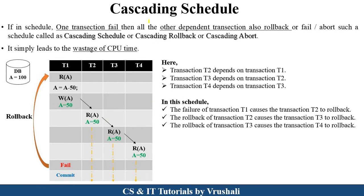The first type is cascading schedule. If one transaction fails, all other dependent transactions also fail or roll back. This means either the transaction completed successfully or it is aborted. This is called a cascading schedule, which is also known as cascading rollback or cascading abort. Let's understand this with an example.